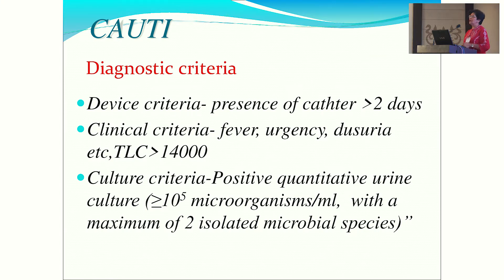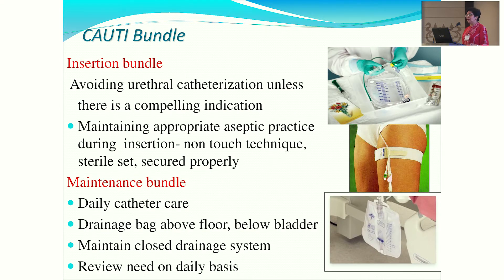For CAUTI diagnosis, two criteria apply: device criteria — patient on Foley catheter for at least two calendar days — and clinical criteria: fever, urgency, dysuria, leucocytosis. Culture criteria require a positive microbiological report with significant growth of one or at most two microorganisms. For prevention, the insertion bundle emphasizes avoiding catheterization unless compellingly indicated, maintaining aseptic non-touch technique, and using a sterile set secured properly. The maintenance bundle requires daily catheter care at least three times per shift, keeping the drainage bag above floor level, and maintaining a closed drainage system.